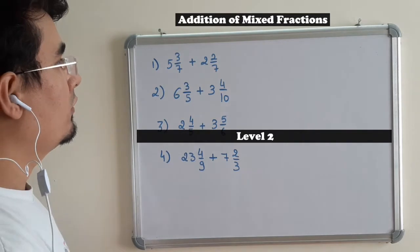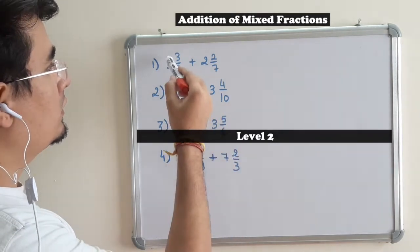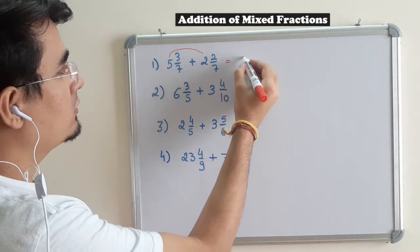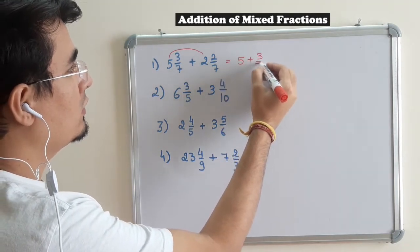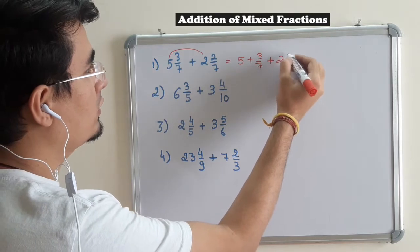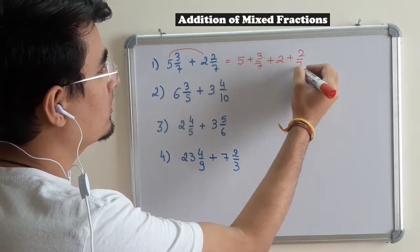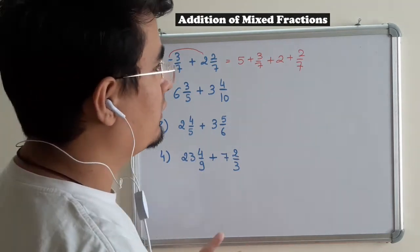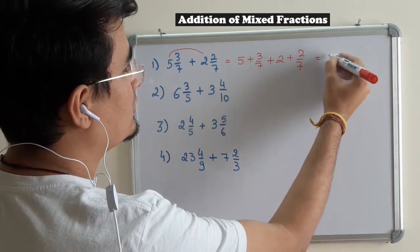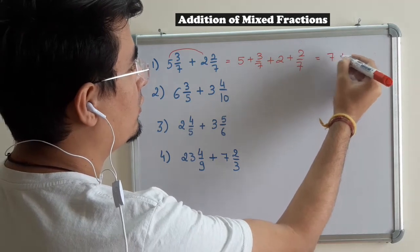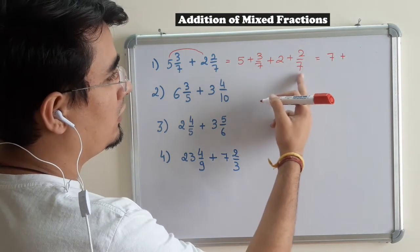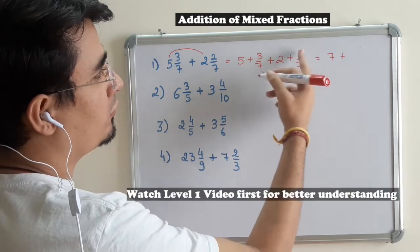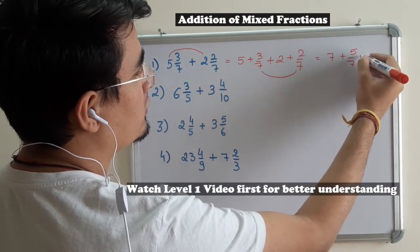Since we have already discussed these are whole, I can also write it as 5 plus 3 by 7 plus 2, 2 by 7. I am doing it a long way to help you explain this. 5 plus 2 is nothing but 7, and if I add these two numbers, denominator is same, so 3 plus 2 is 5 by 7.